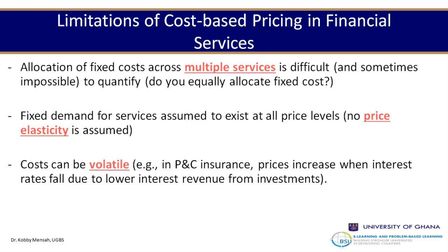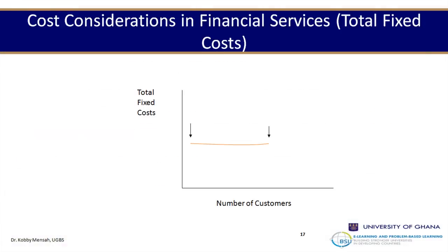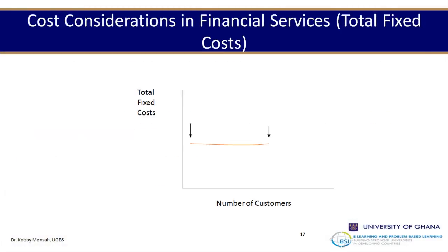Cost can be volatile. For example, in property and casualty insurance, prices increase when interest rates fall, because insurance companies invest premiums and earn returns — when interest revenue from investment falls, they raise insurance pricing to compensate. This shows that cost-based pricing can be deceptive. The total fixed cost remains the same regardless of number of customers up to a point.